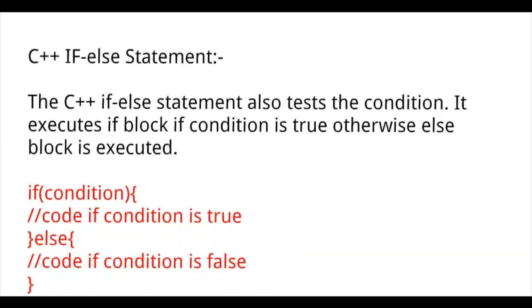The C++ if-else statement tests a condition. It executes the if block if the condition is true; otherwise, the else block is executed. If the condition is true, the if block code executes. If the condition is false, the else block code executes.